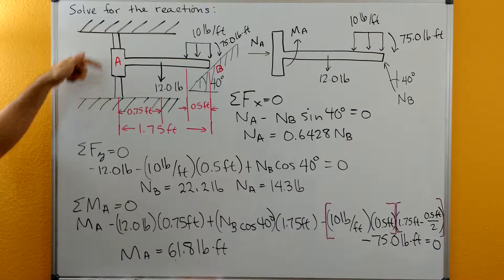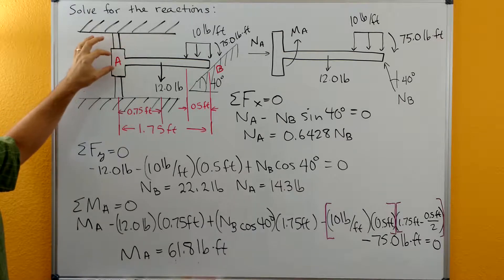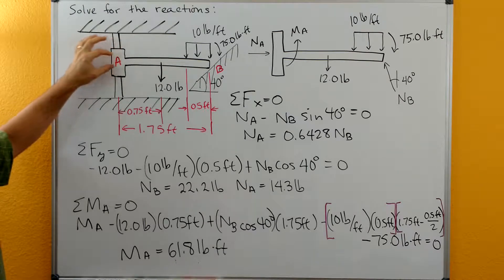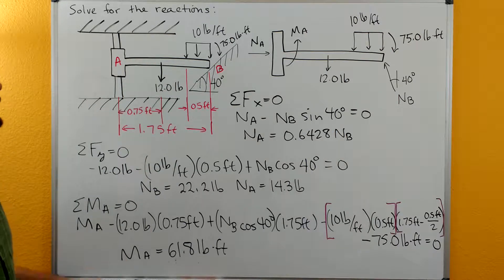We have a smooth frictionless rod here and then a collar at A, and then the beam is attached with a fixed support to the collar. The beam is resting on a smooth frictionless surface over here on B.